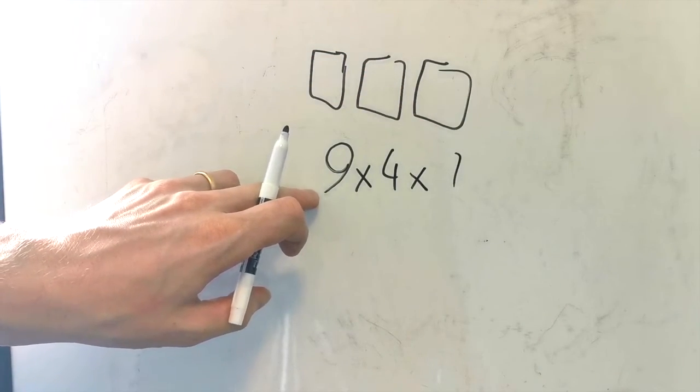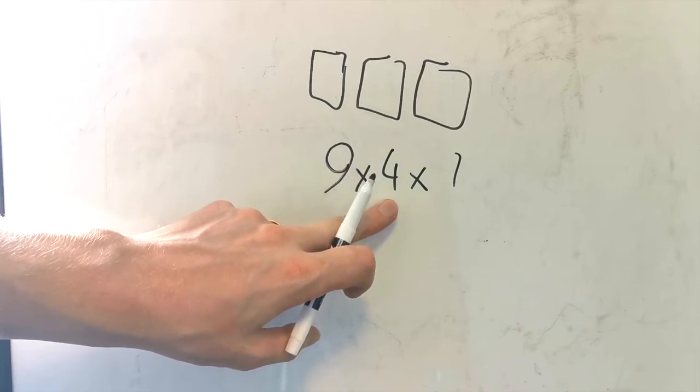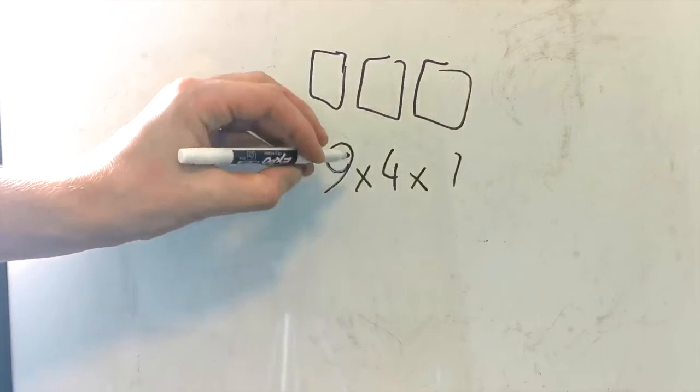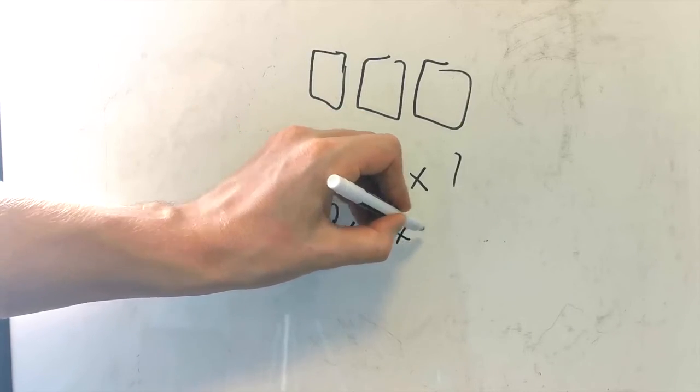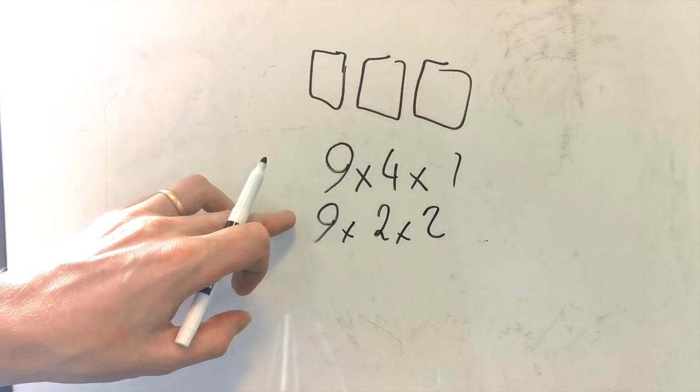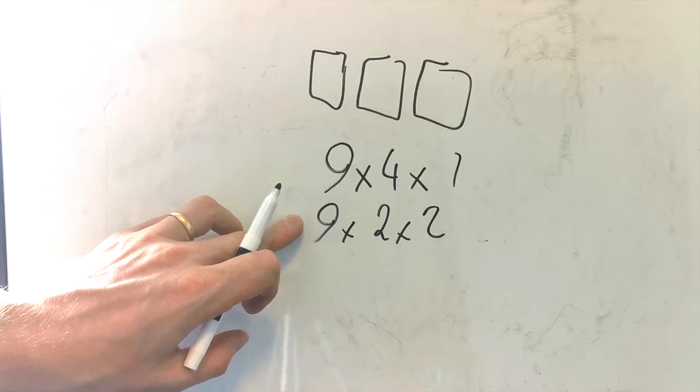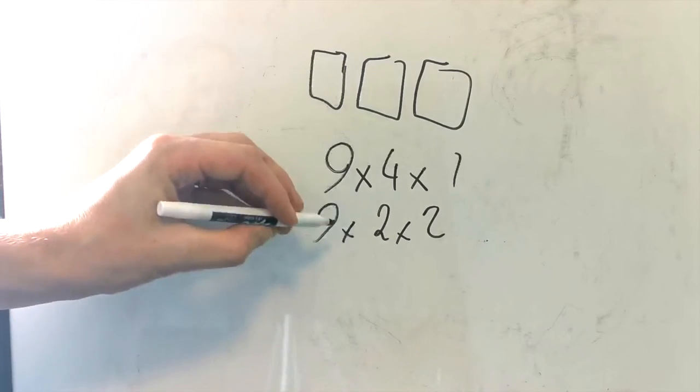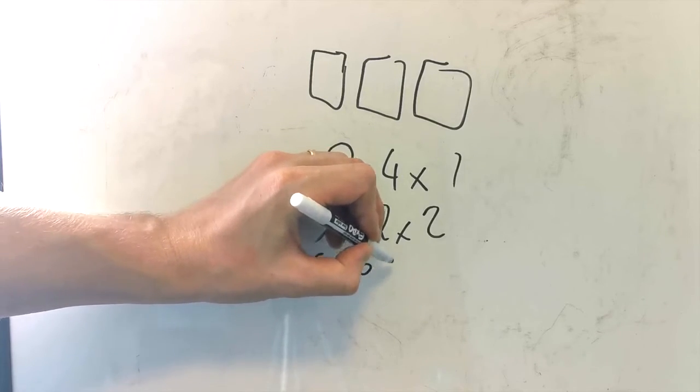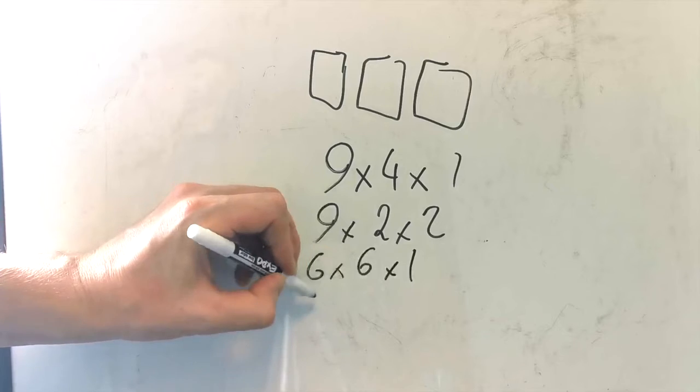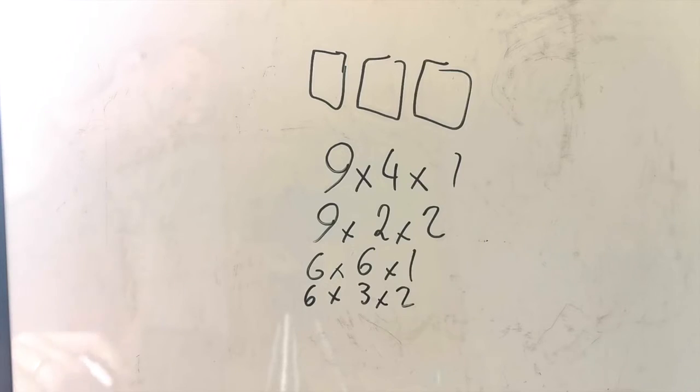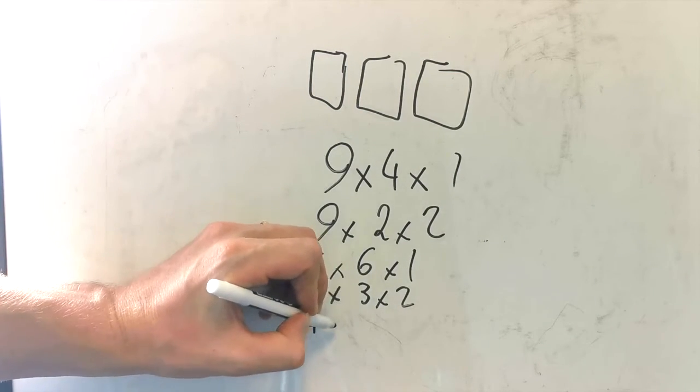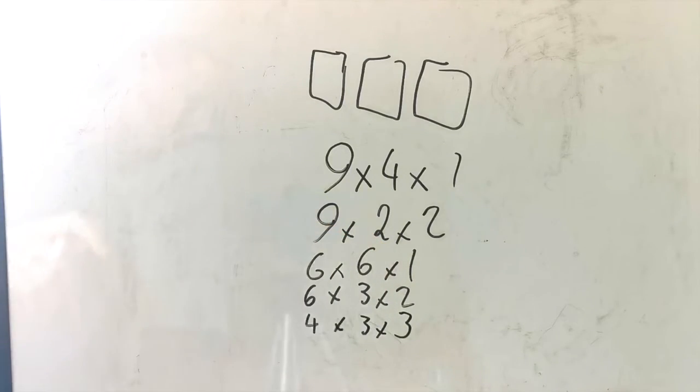So we could think 9 times 4 times 1. Okay. Why have I started with 9? Well, the highest digit is 9. And the next one will be 4 and this will have to be 1. Now, we're still going to try and keep this as high as possible. What's the next lowest number? This could be 9 and 2 and 2. Now, what's the next smallest factor of 36? So it's a digit. Well, it would be 6. So then you have 6 times 6 times 1. And then you have 6 times 3 times 2. Now, what's the next smallest digit? It would be 4 times 3 times 3. And then you can't go any lower than this.